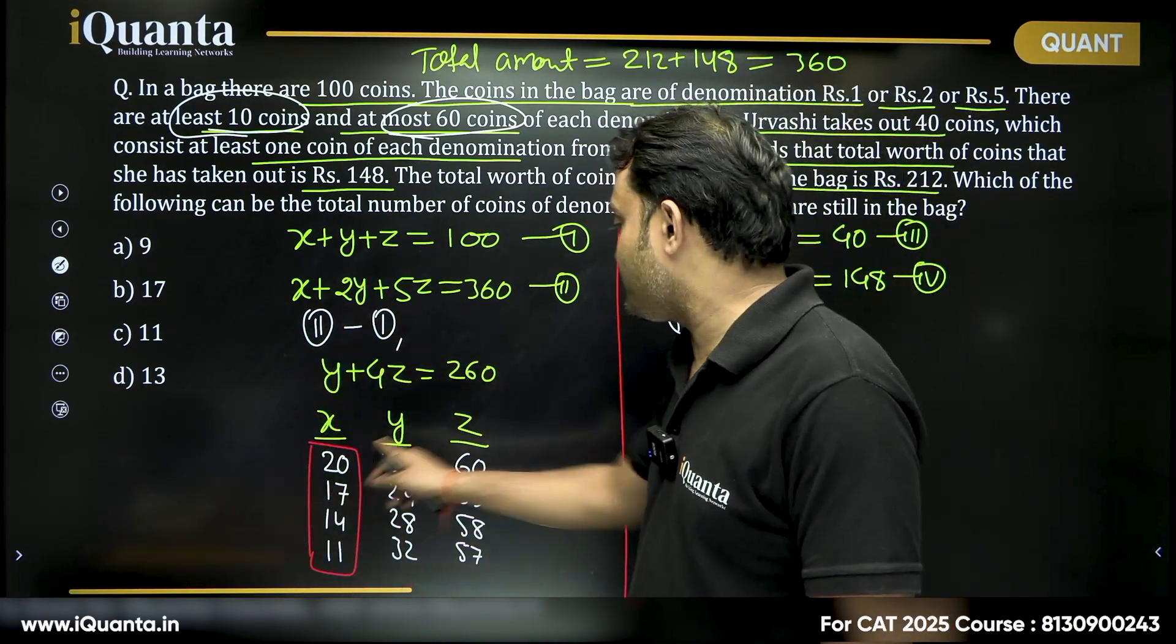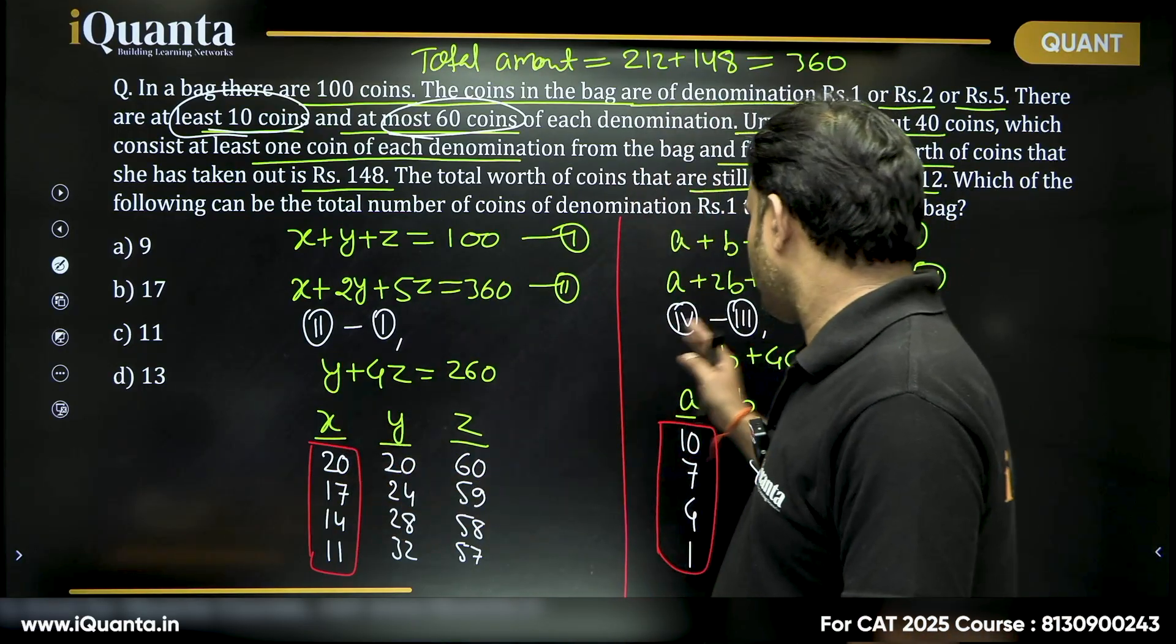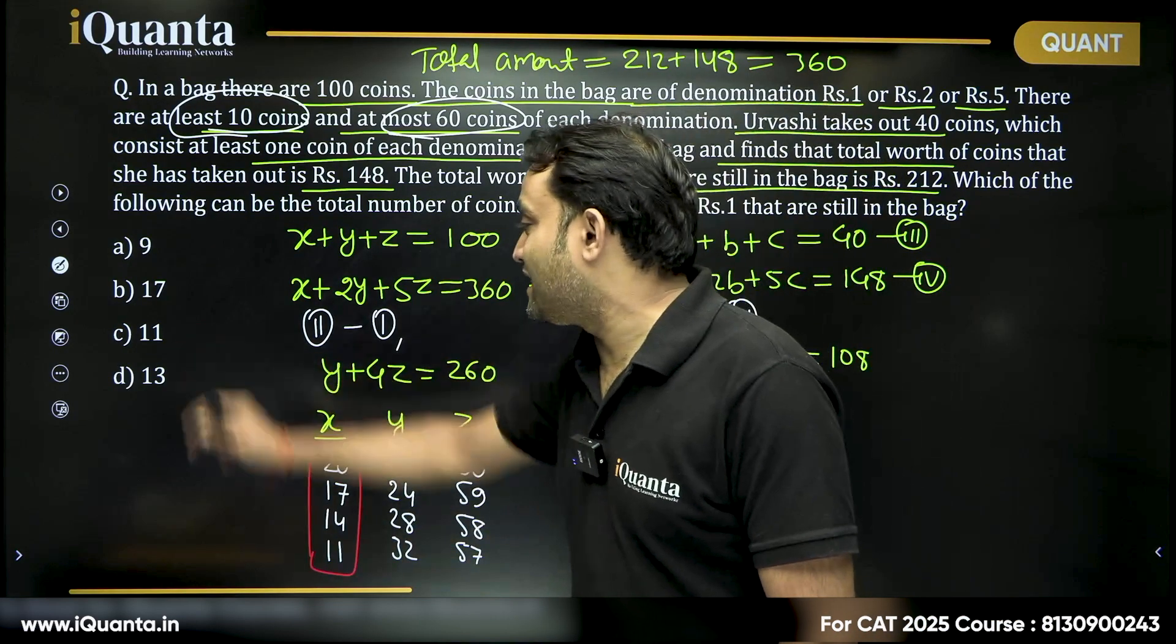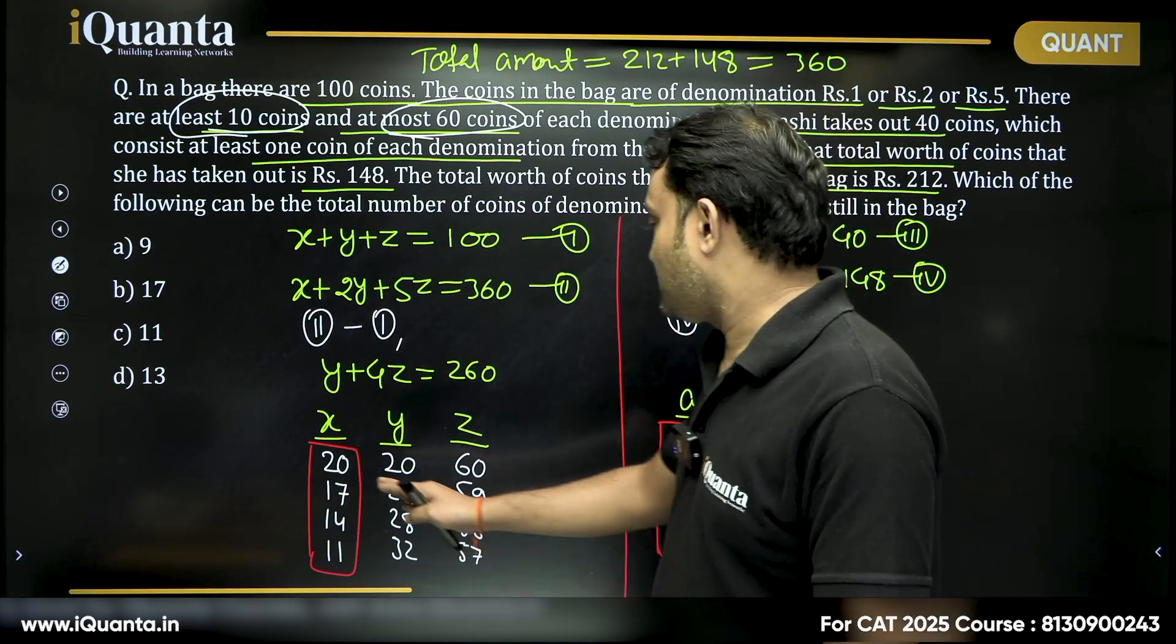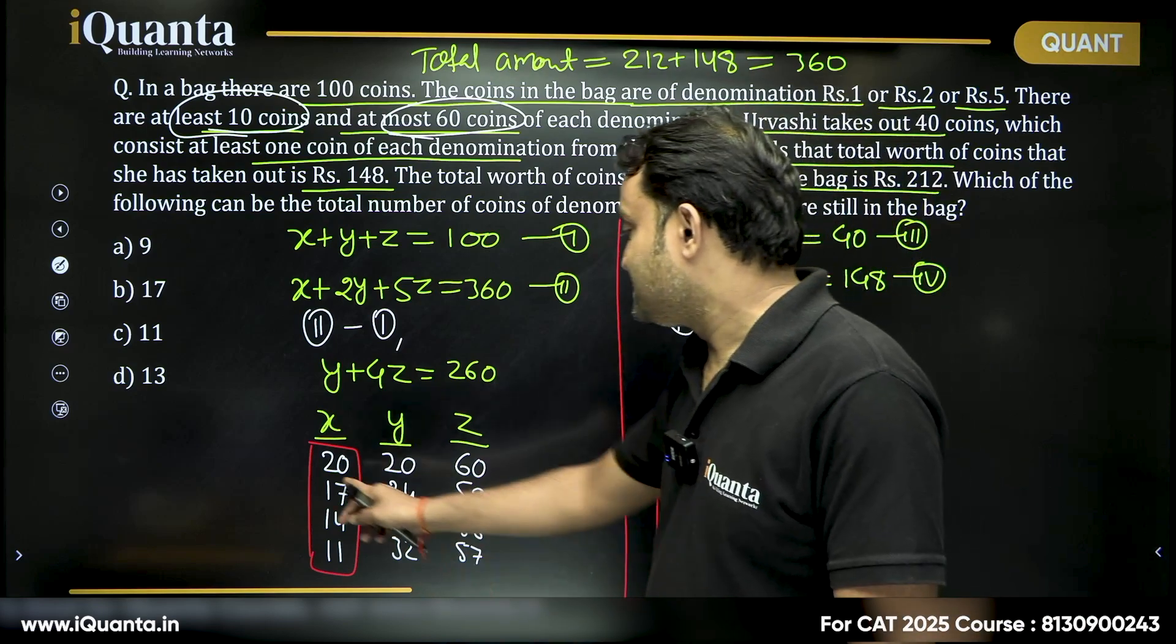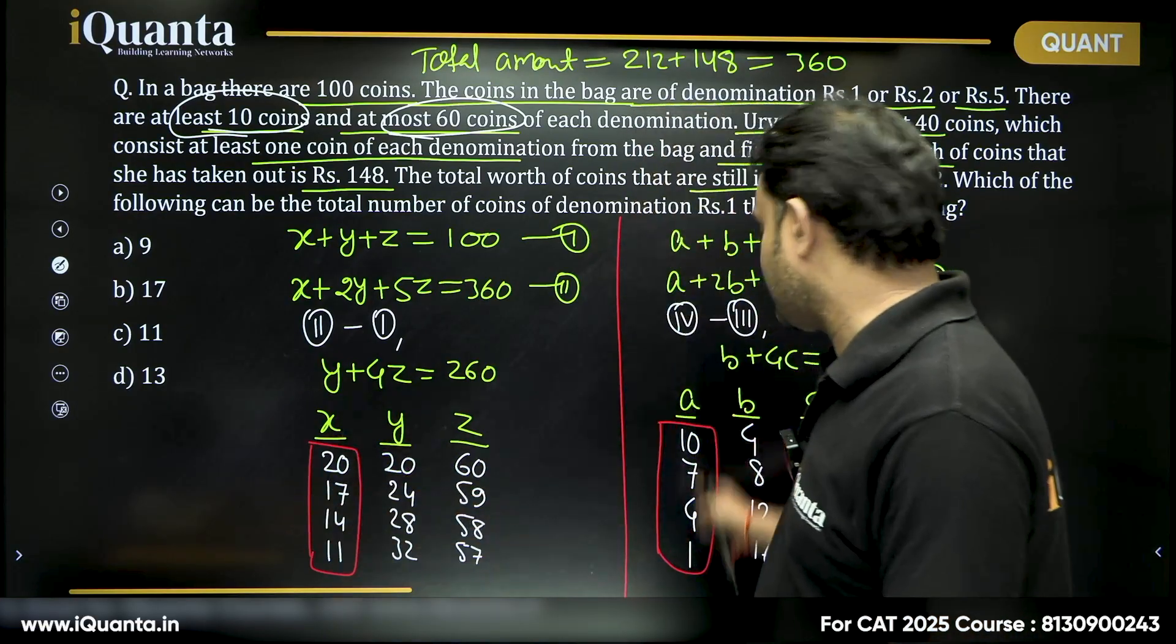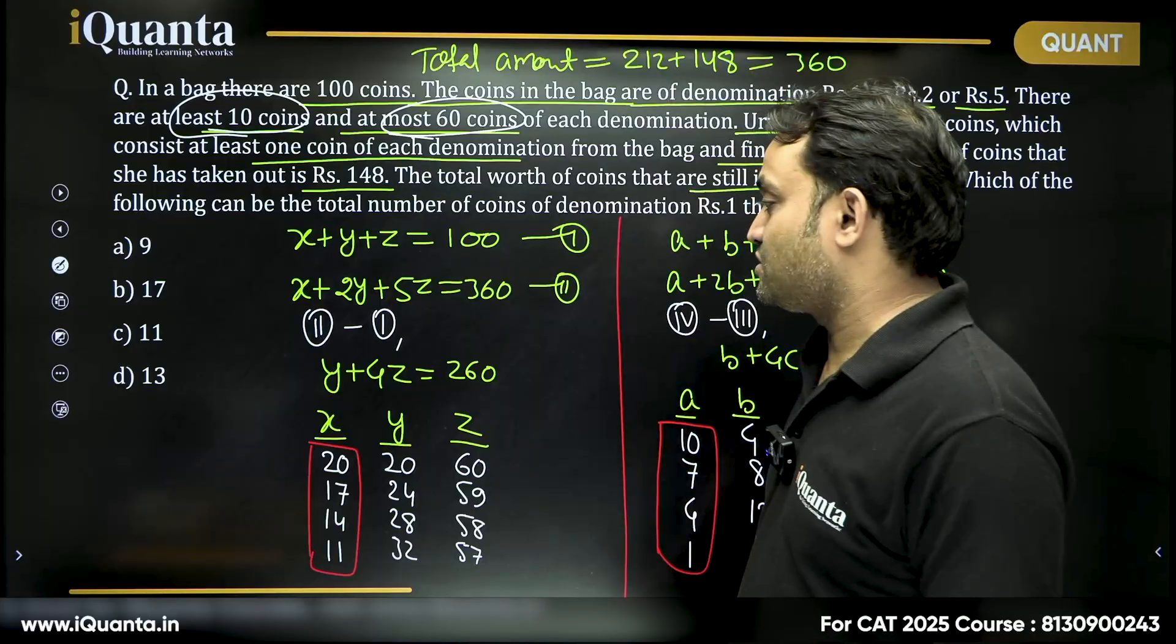Next option 17, 20 minus 3, no 3 here. 17 minus 0, that is not possible. 14 and 11 is always not possible. Now consider 11. 11 cannot be left. If we check in case of 11, 20 minus 9 should be 11, not possible. 17 minus 11 will be 6, no 6 is here. 14 minus 3 is 11, there is again no 3 here. 11 minus 11 is 0 which is of course not going to happen.